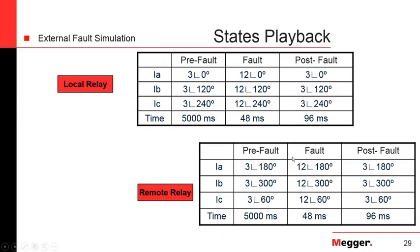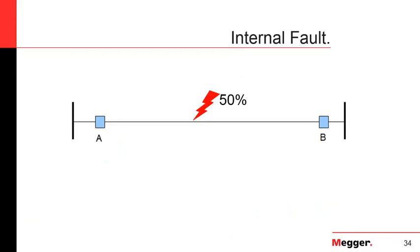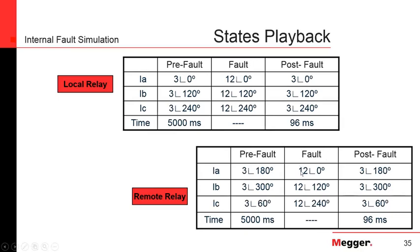Notice that for the remote relay, the current in the fault state is 180 degrees apart — meaning current flowing behind the relay. Since it is an internal fault and relay B is looking to the left, in the fault state that relay will have the current in phase with the current on the local relay — or rather 180 degrees apart — but since relay B is looking the opposite way, it effectively reads zero. The key point: to create an internal fault, all you need to do is reverse the angle.